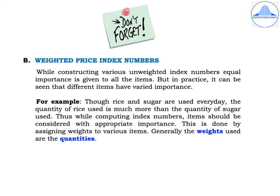For example, though rice and sugar are used every day, the quantity of rice used is much more than the quantity of sugar used. Thus, while computing index numbers, items should be considered with appropriate importance. This is done by assigning weights to various items, and the weights are usually the quantities of the items which are consumed.